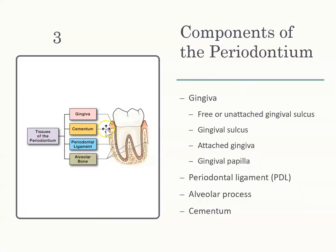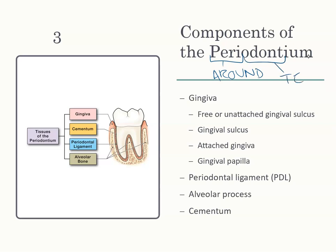What makes up the periodontium? When we look at the periodontium, the tissues are the things surrounding the teeth. Let's look at the word 'periodontium.' 'Peri' means around, and 'odont' means teeth. So the periodontium are the structures that are around the teeth — the gums, the gingiva, the cementum, the PDLs, and the bones. These are the components of the periodontium.